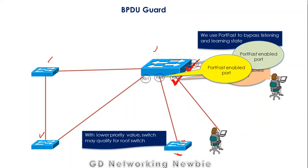This would only happen if BPDUs are exchanged on that particular port. But if this port stops receiving BPDUs from this new switch, our problem is solved. So we are looking for a solution where this port should be disabled whenever it receives any BPDU from this unintentionally connected switch.